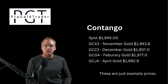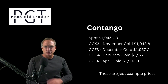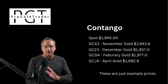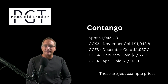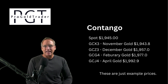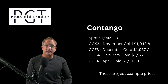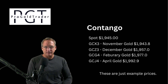Right now, with example prices: $19.45 on the spot, and going out to the December contract you've got $19.57. That is effectively contango — when the futures price is higher than the spot price.